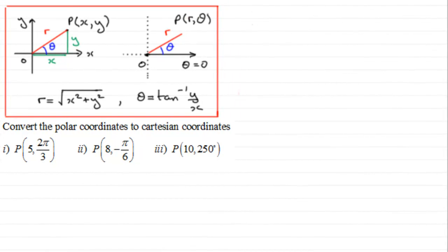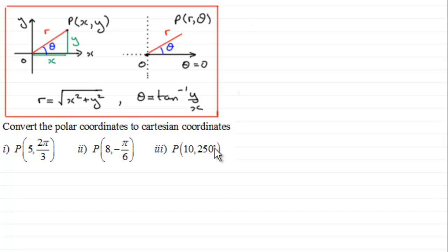Hi, welcome to another video in my series on polar coordinates. What we've got here is a quick video where you have to convert polar coordinates to Cartesian coordinates. I've got three examples: two in radians and the third one in degrees. If you'd like to have a go at this, just pause the video, come back when ready and check your work against my solutions.